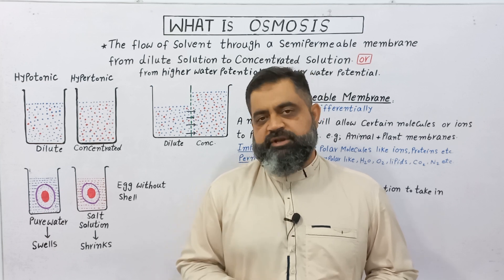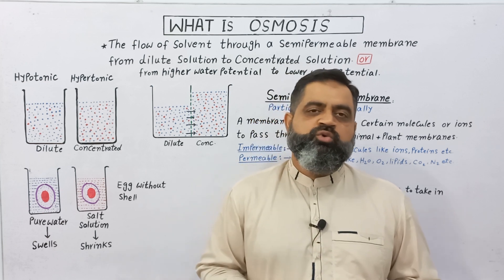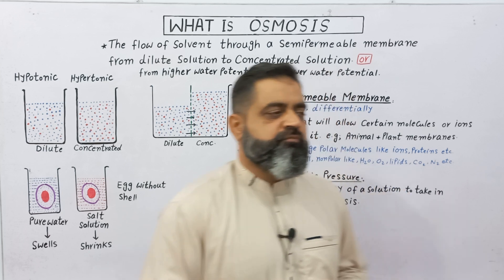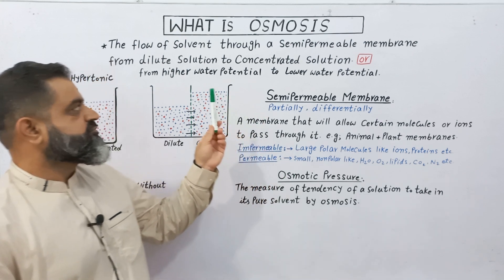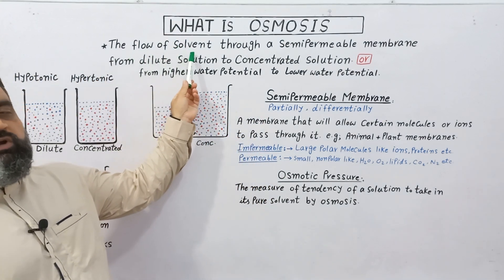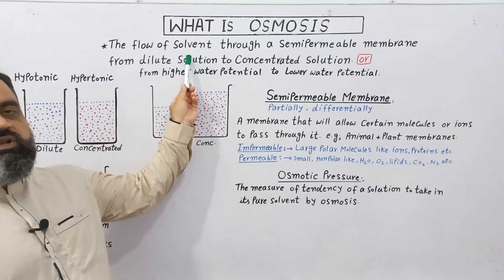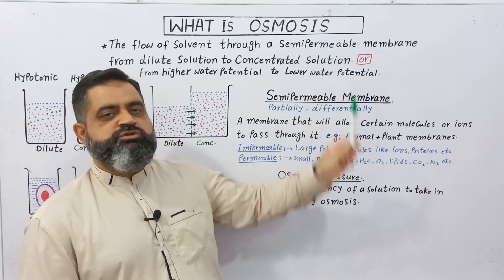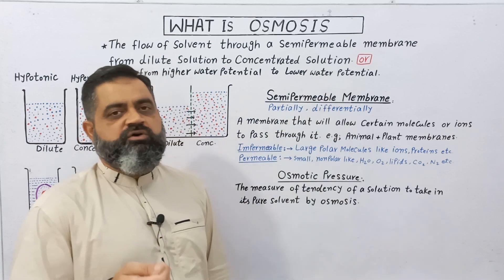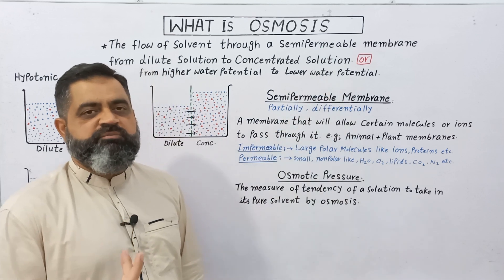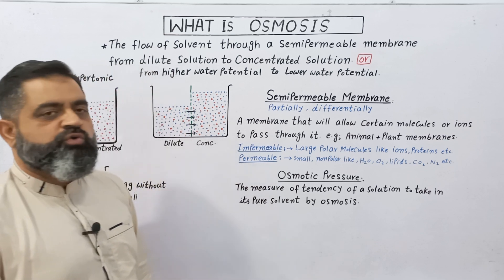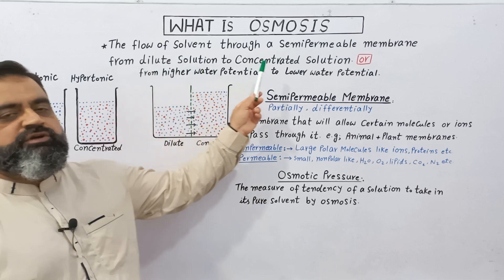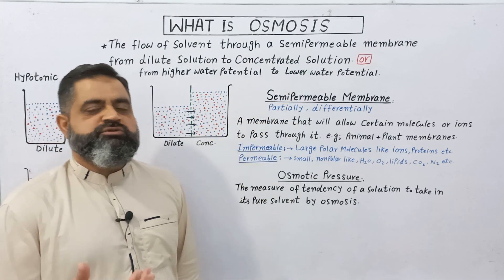First of all, we are going to look at the definition of osmosis. The flow of solvent, which is usually water in living systems, through a semi-permeable membrane — which is usually a membrane made up of animal cell or plant cell; the cell membrane is known as a semi-permeable membrane, which we will discuss later — from dilute solution to concentrated solution.